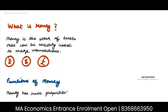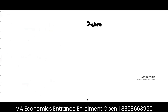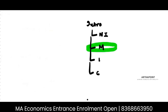Good evening. Today we will begin with the chapter related to money. The entire introductory macro is divided into four main units: national income, money, inflation, and closed economy. We will begin with money, and the aim would be to finish this in the next two, at most three, lectures.